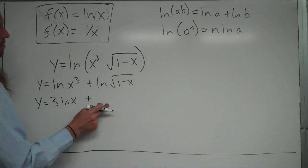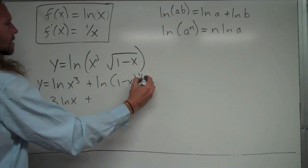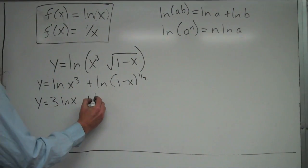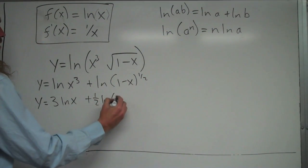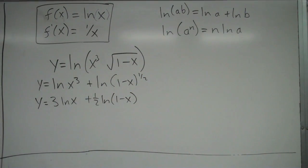And then I notice square root, that's the same thing as writing to the 1 half power. So I could bring that 1 half power out in front as 1 half natural log 1 minus x. So I've done a couple steps here to simplify before I've even taken the derivative, but now I've got some super easy derivatives to take.